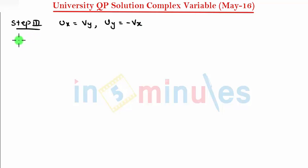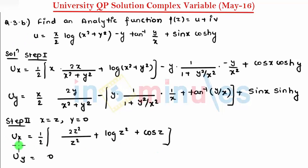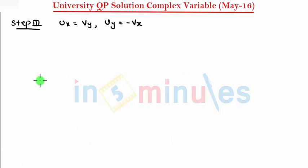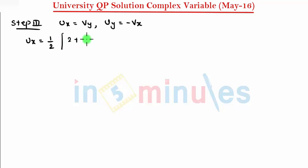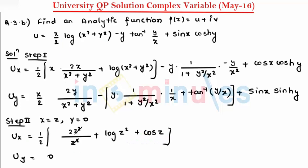With respect to that, my ux is here, so let it be in the same way because I want ux for future reference. So 1 by 2 and this gets cancelled, so it remains as 2 plus 2 log z and cos z.